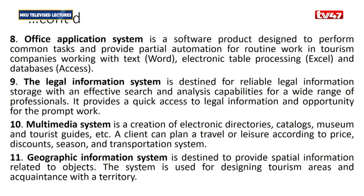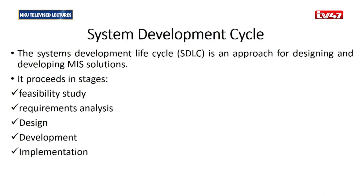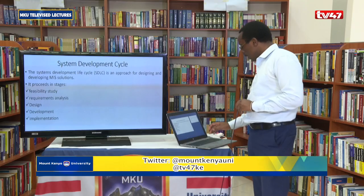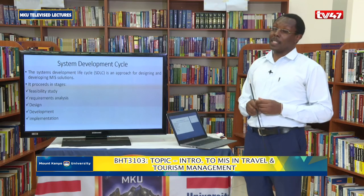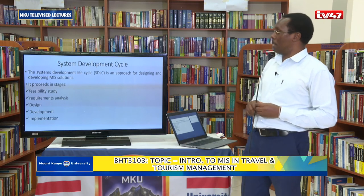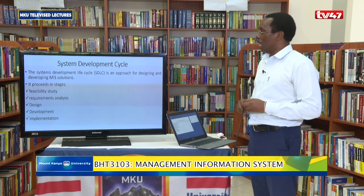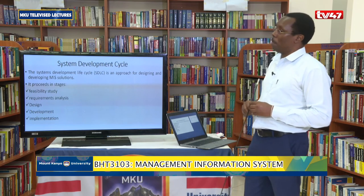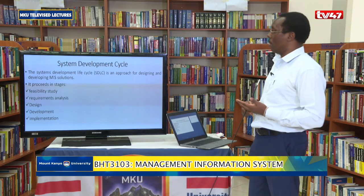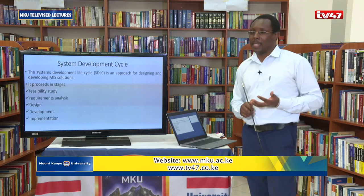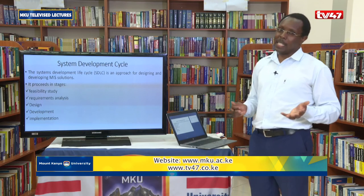Then we also have GIS — or what we call Geographical Information System — which provides spatial information for travelers. The last bit I want us to look at is what we call the system development life cycle. When you look at the system development cycle, we are asking ourselves: when you are developing an MIS, what does it involve?